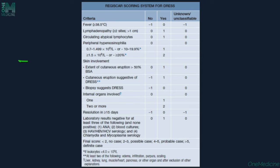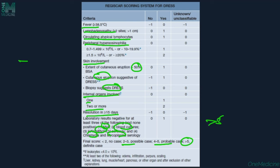Resolution lasting more than 15 days, and negative laboratory results for ANA, blood cultures, HIV, HBsAg, chlamydia, and mycoplasma serology, are also included in the RegiSCAR criteria. A final score of less than 2 is no case, 2–3 is possible, 4–5 is probable, and greater than 5 is a definitive case of DRESS.